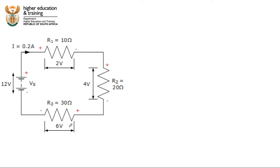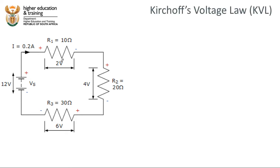That's what we expect. This resistor is three times bigger than this resistor, so its voltage drop of 6 volts is going to be three times bigger than this voltage drop of 2 volts. But let's take a look at Kirchhoff's voltage law, often abbreviated to just KVL.